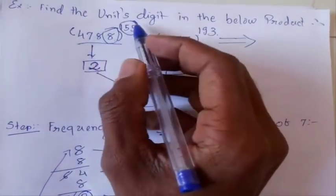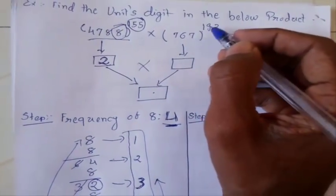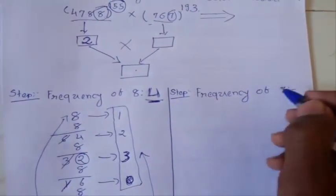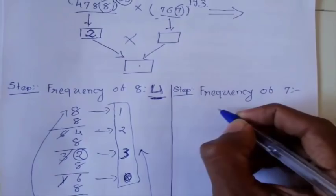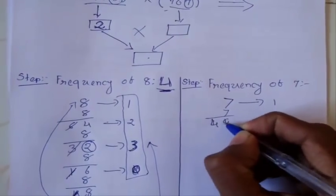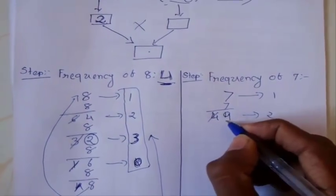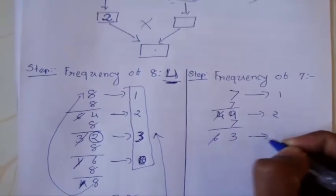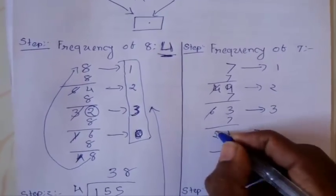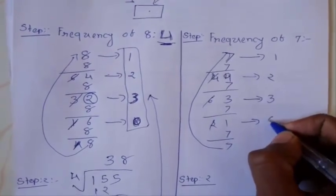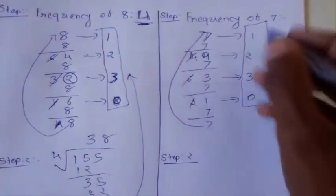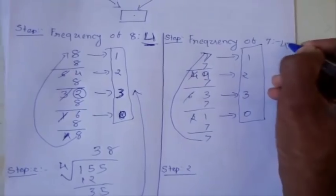The units digit for the first exponential form is 2. In the same manner, we find the units digit for the second exponential form. For this number the units digit is 7, and the exponent is 193. We find the frequency of 7 the same way: the series gives us 7 → 9 → 3 → 1, and then 7 repeats. So the frequency of 7 is 4.